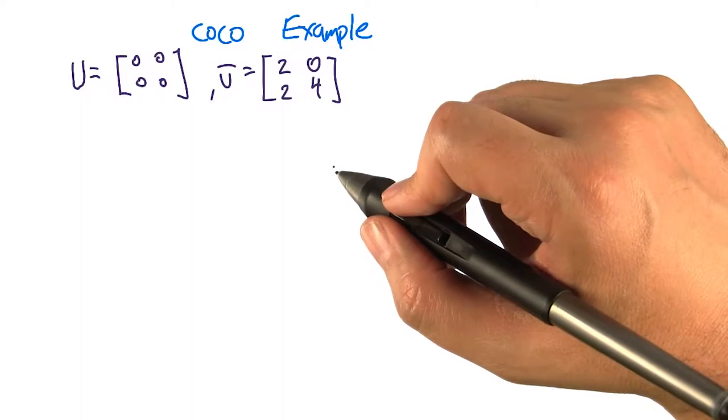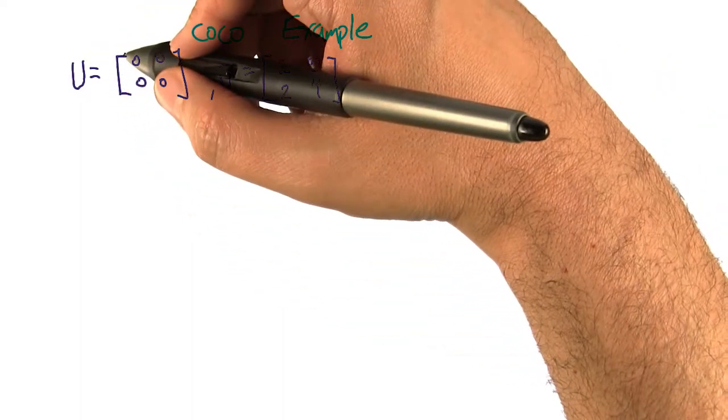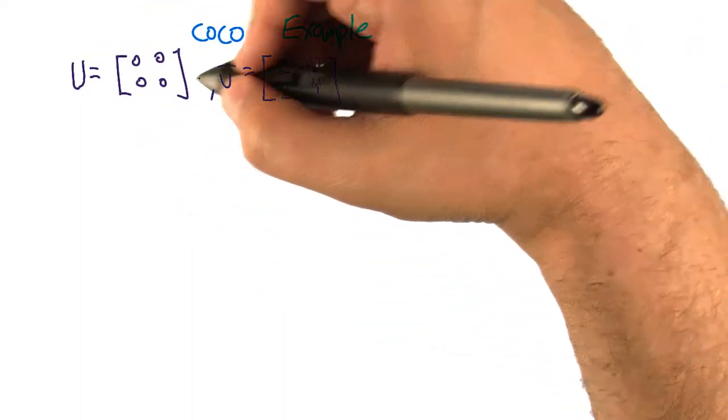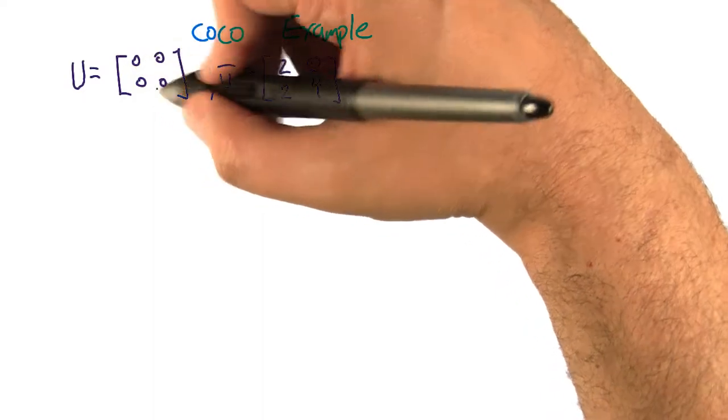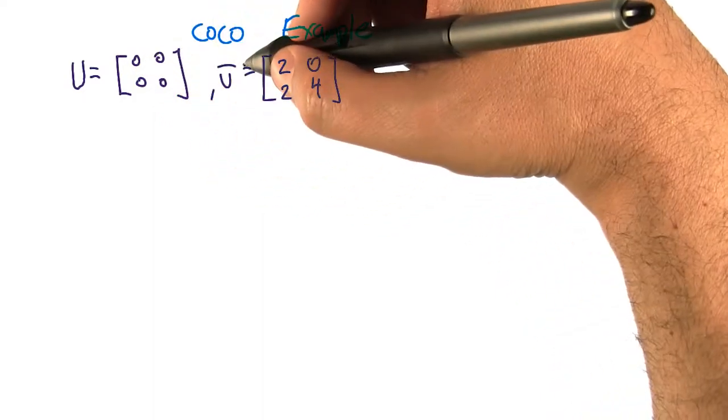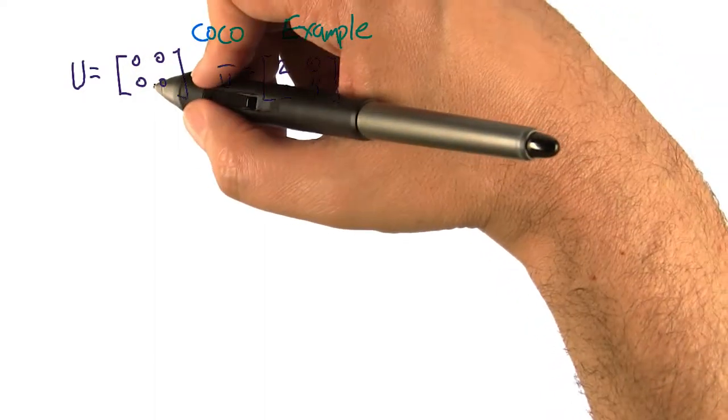So here's the U and the U bar matrix from the banana game. So there's one player who gets zero no matter what. That's the friend, that's curly.